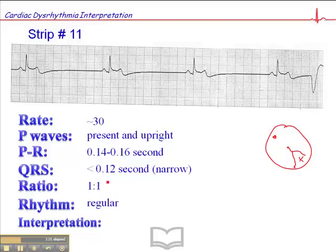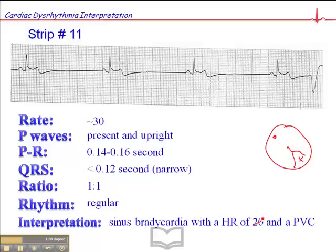And so that's a premature ventricular complex. So our interpretation is a sinus bradycardia with a heart rate of, whoops, that's a mistake there. That should be 30, with a premature ventricular complex.